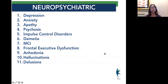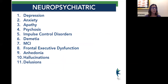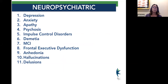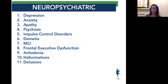For neuropsychiatric symptoms, we have depression, anxiety, apathy, impulse control problems, dementia, mild cognitive impairment, problems with decision-making and executive function, anhedonia — just lack of interest — and then hallucinations and delusions, which we talk about a lot. All of these things on this list can be related to Parkinson's disease itself and not from other causes, though sometimes they are — it's all part of the Parkinson's disease problems.